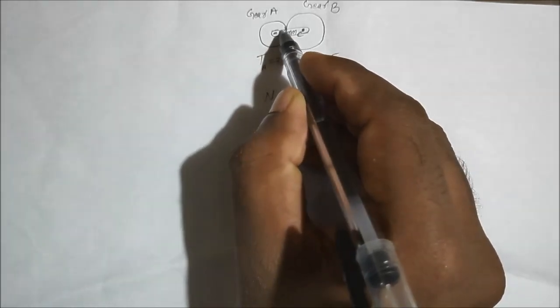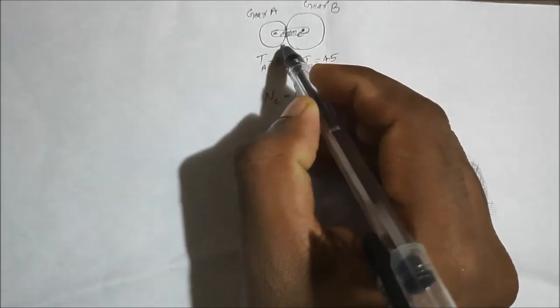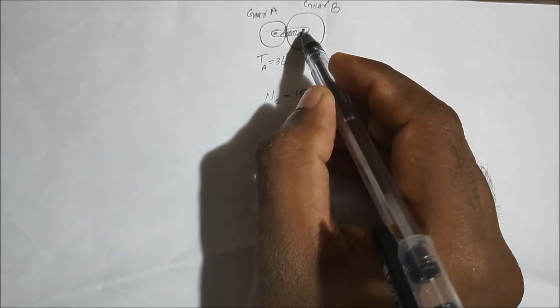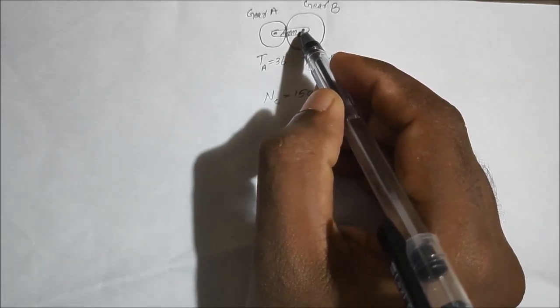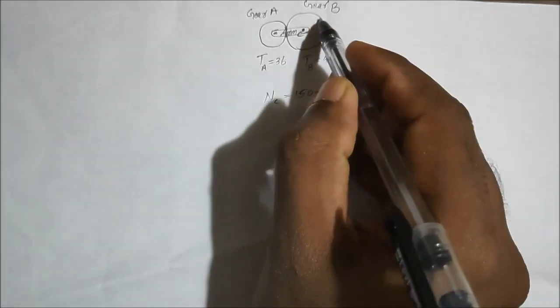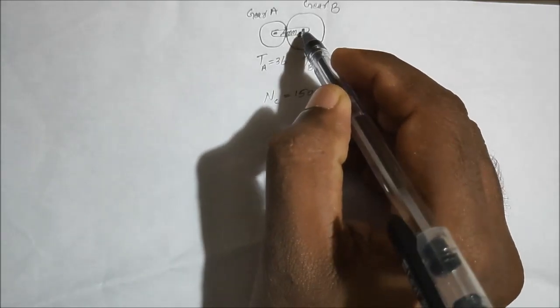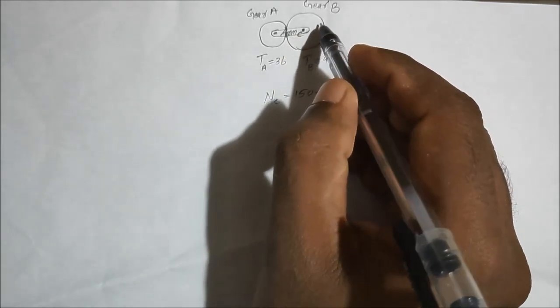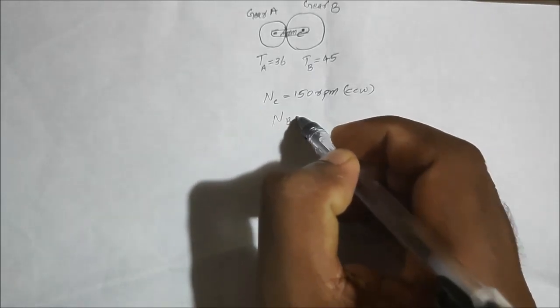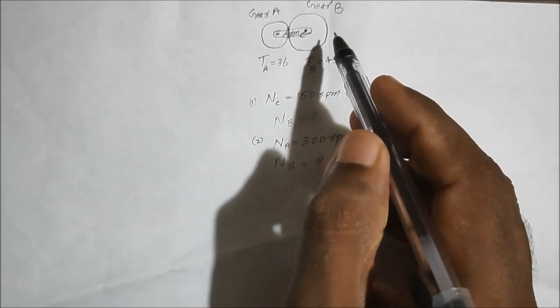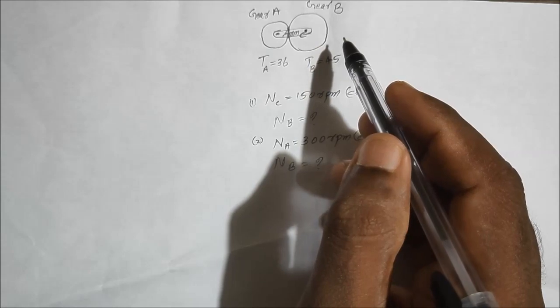Gear A is not rotating — it is stationary, fixed. Arm C means gear A and gear B are connected to the rotation. The arm rotates in the counterclockwise direction. With gear A fixed, gear B rotates in the periphery in the counterclockwise direction. This gives us the arm C rotation and the corresponding speed of gear B for the first question. The second question asks: if gear A rotates clockwise at 300 RPM, what will be the rotation speed of gear B?